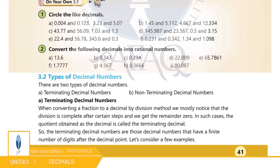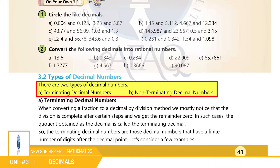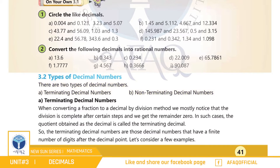ہمارے پاس دو طرح کے decimal numbers ہوتے ہیں: 1. Terminating Decimal Numbers، 2. Non-Terminating Decimal Numbers.